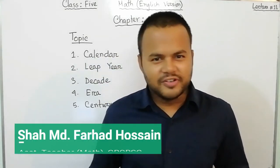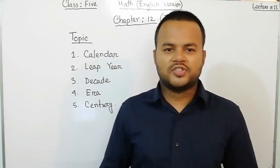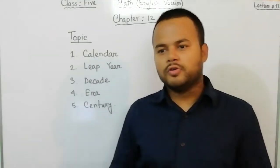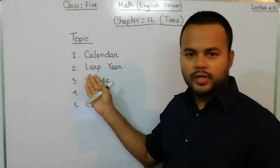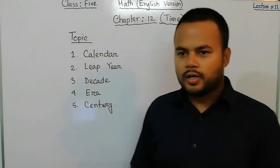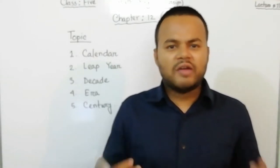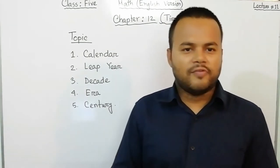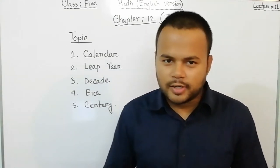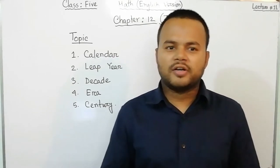Hello my dear students, how are you all? I hope all of you are fine. Today I am here with another class and I am going to start a new chapter — Chapter 12 — and the name of the chapter is Time. In this chapter we learn about calendar, leap year, decade, era, and century. A calendar consists of twelve months, and in our country we use three types of calendar: English calendar, Bangla calendar, and Hijri calendar.